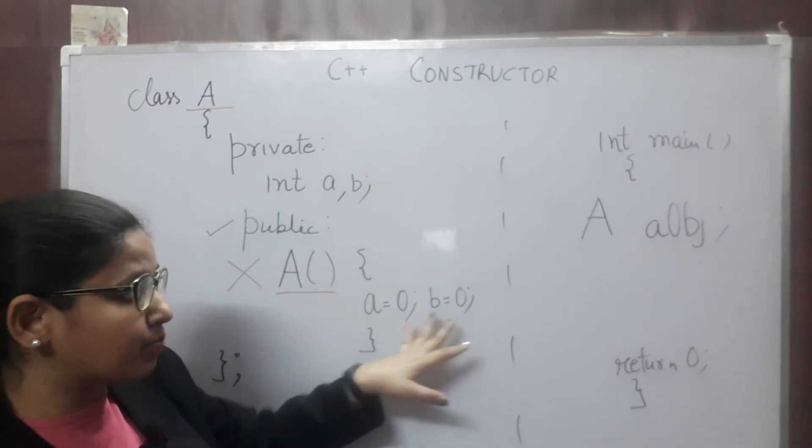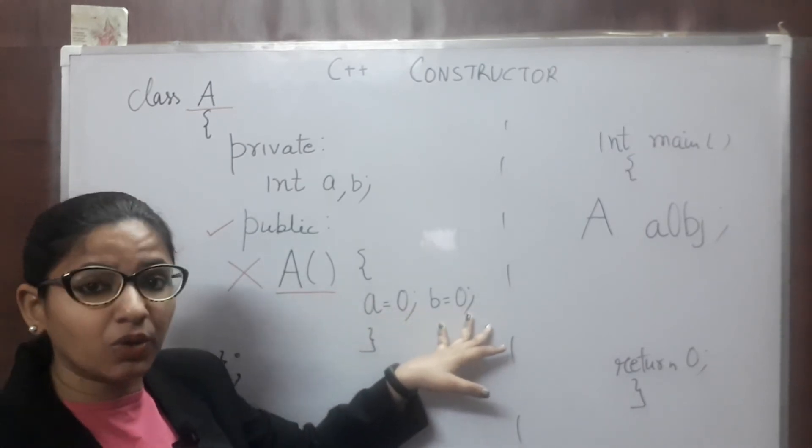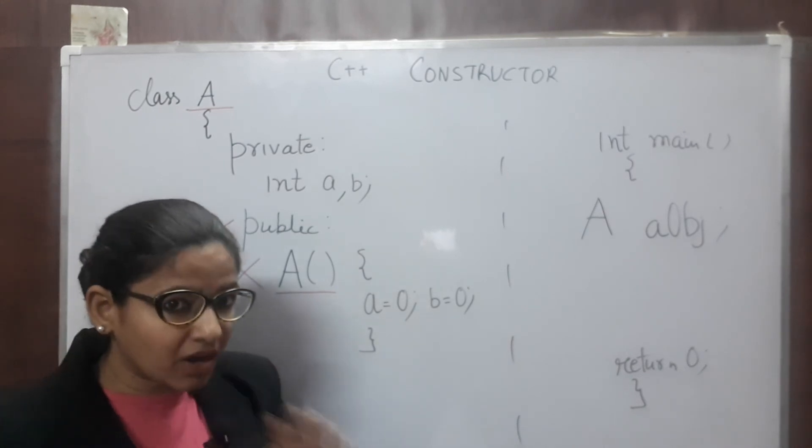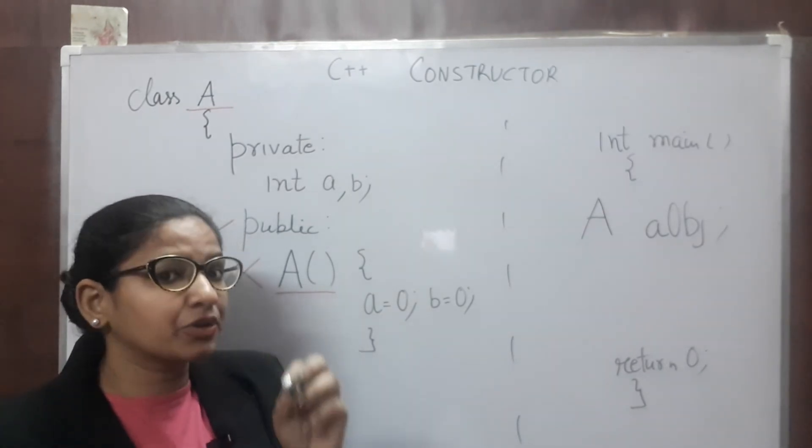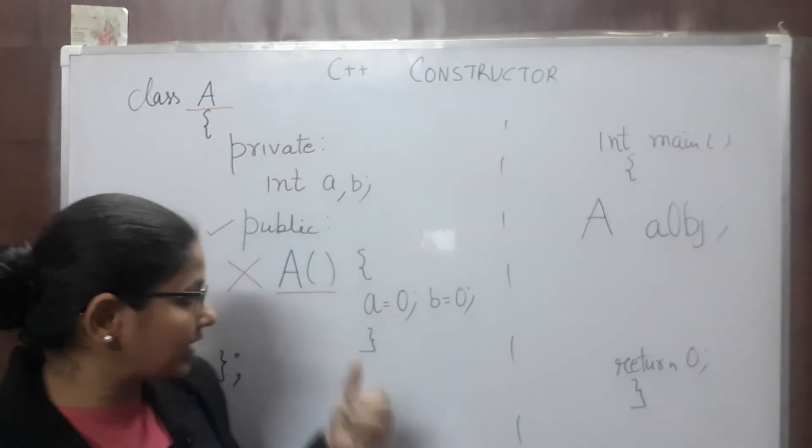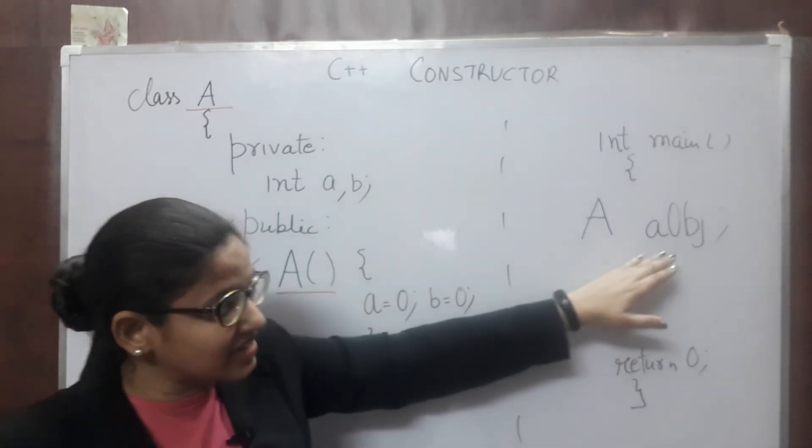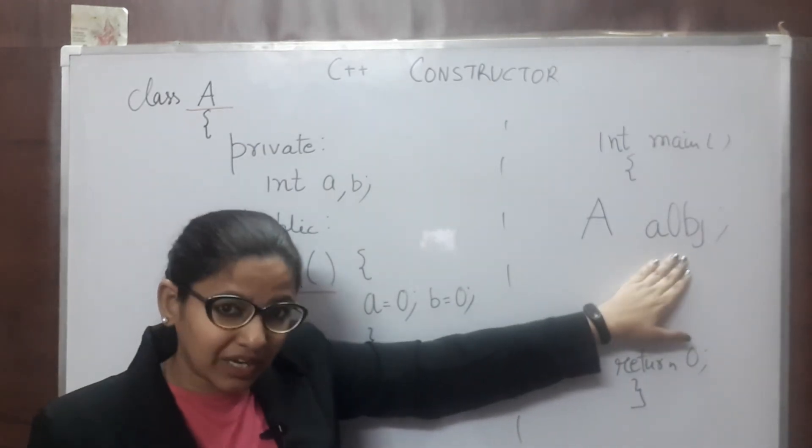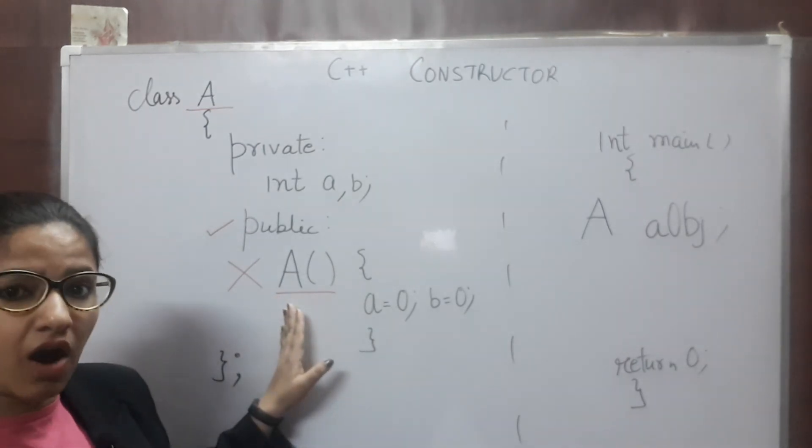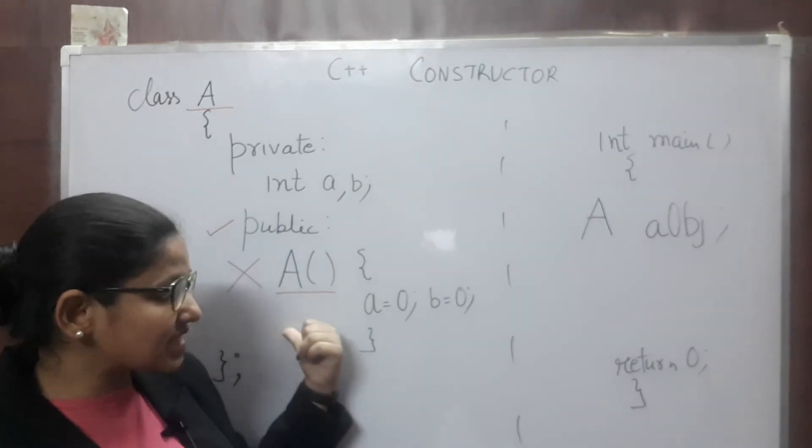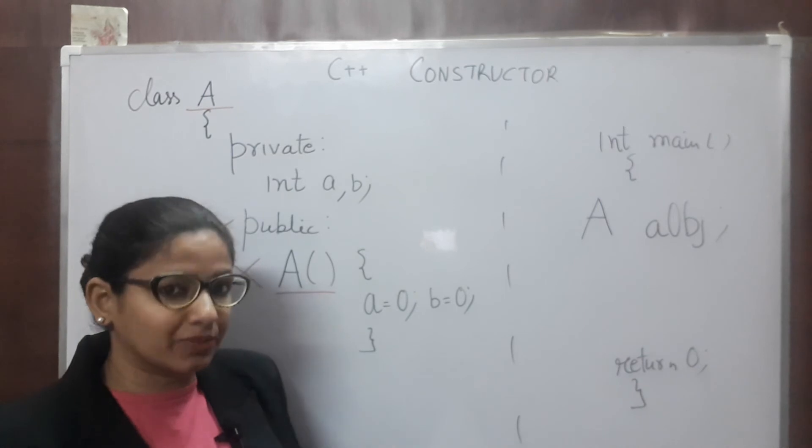That means A and B, both will be initialized with value 0. You are not explicitly calling, you are not using dot operator, you are not calling A. You are just creating an object. And when you create this object, this constructor is called automatically. This constructor is invoked automatically.